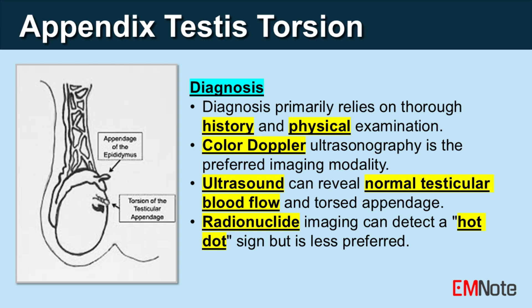Ultrasound findings may reveal: normal blood flow to the affected testicle, helping rule out testicular torsion; hypoperfusion of the epididymis; and the torsed appendage appearing as a hypoechoic or hyperechoic nodule, depending on the duration of torsion.